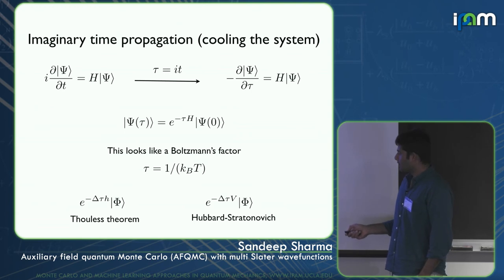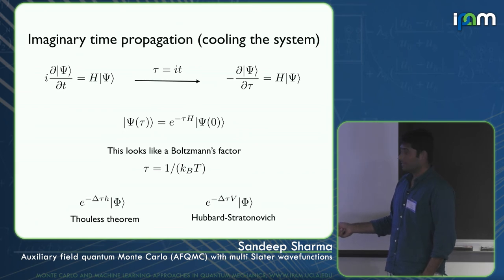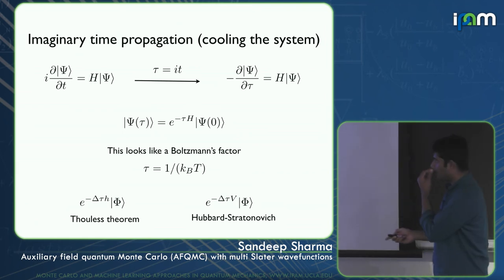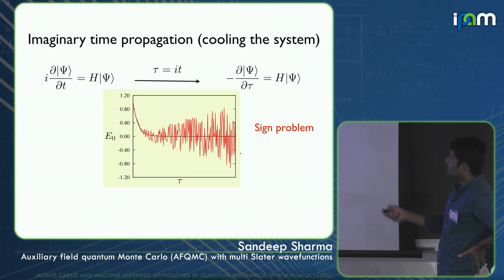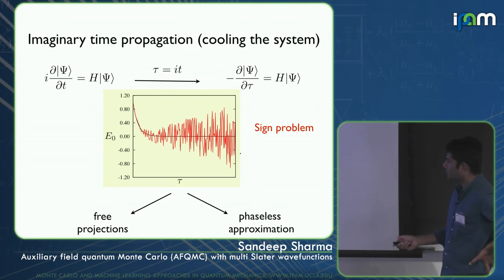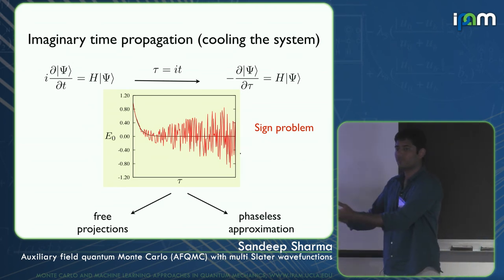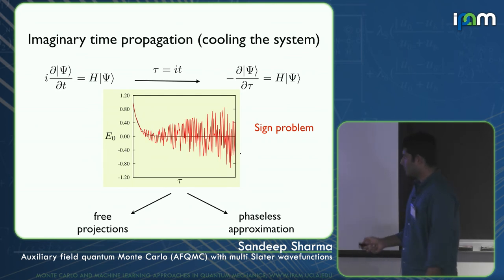In DMC the roles are reversed: the two-body part is treated exactly and the one-body part stochastically. In AFQMC, as you propagate forward you eventually get a sign problem and the signal becomes too noisy. There are two approaches: free projection and the phaseless approximation. Phaseless approximation introduces a bias — hopefully small — and gives reasonable results. Free projection is exact.